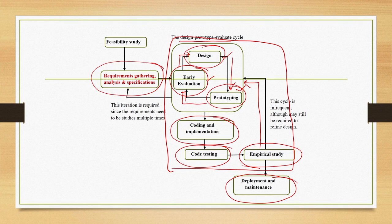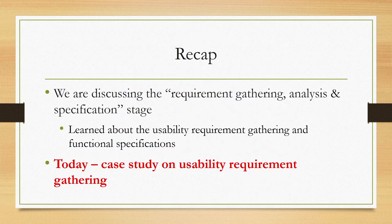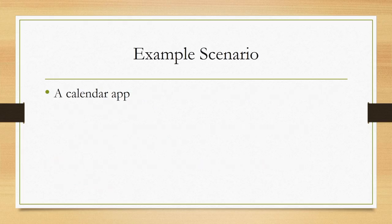We started with the requirement gathering stage. By requirements, we are referring to two types: usability requirements and functional requirements. Both types of requirements are important. We have learned about what these different types of requirements are and how to gather them. In this lecture we are going to reinforce our learning with one case study of gathering usability requirements for a practical system — a calendar app which we have mentioned in earlier lectures.